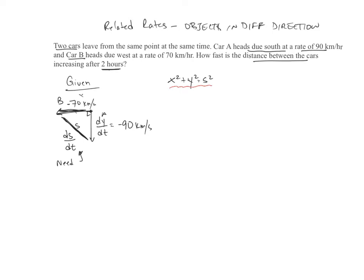And now I have, nothing is constant here. Everything's changing, so I have to differentiate implicitly everything. So this one becomes 2X, and then of course we're going to put DX/DT. Over here we end up with 2Y, and we're going to put DY/DT. And then over here we have 2S with the DS/DT.